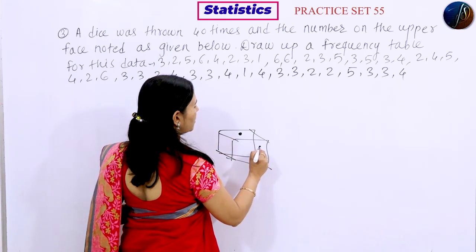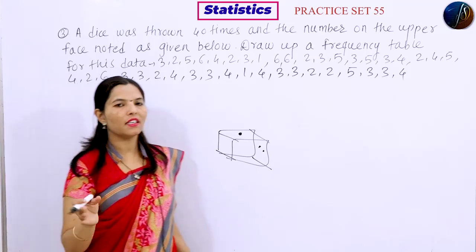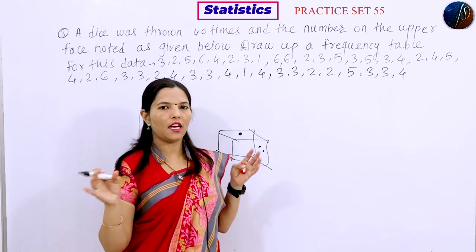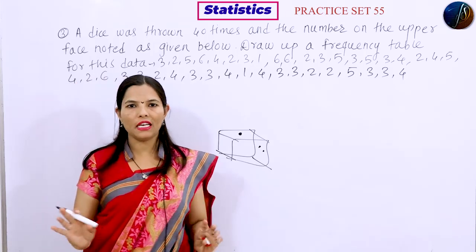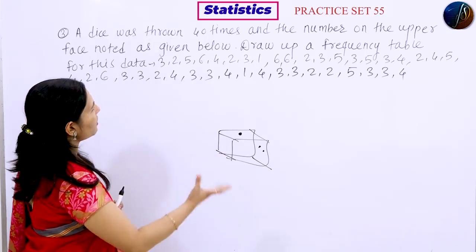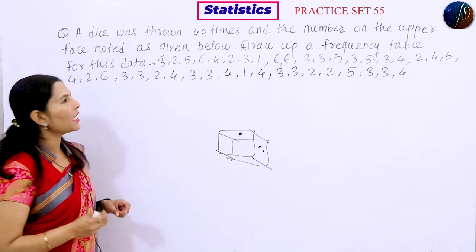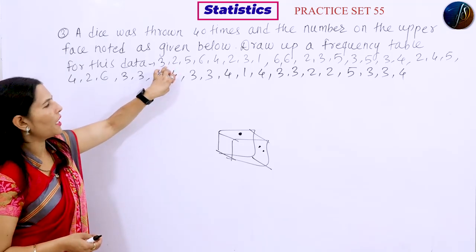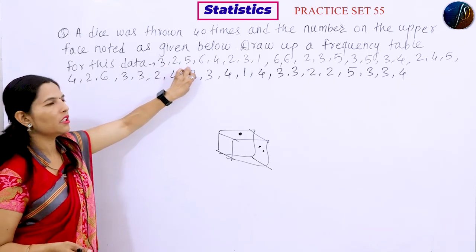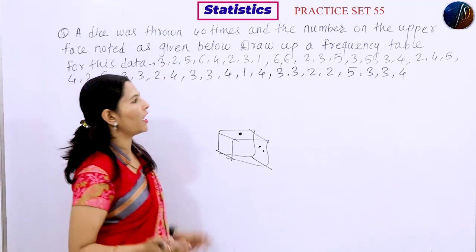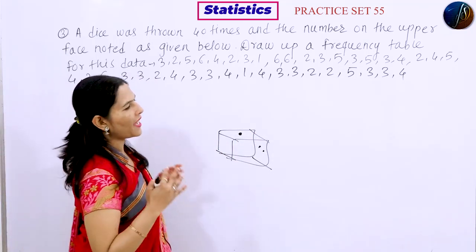The faces of the dice are numbered one, two, three, four, five, and six — six faces in total. When the dice is thrown 40 times, the number on the upper surface is recorded. We have this rough data and we have to prepare a frequency table.